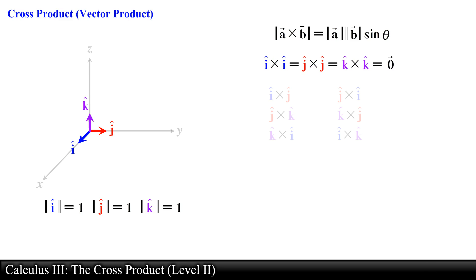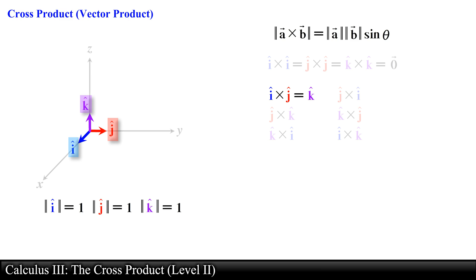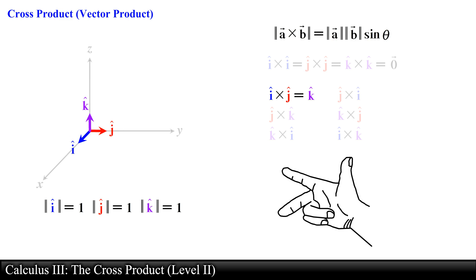Next let's find the cross product between i hat and j hat. Since the cross product between two vectors in space produces a vector that is orthogonal to these two vectors, it follows that the cross product is equal to k hat, since this unit vector is orthogonal to i hat and j hat, and it is consistent with the right hand rule. In a similar fashion j hat cross k hat is equal to i hat, and k hat cross i hat is equal to j hat.